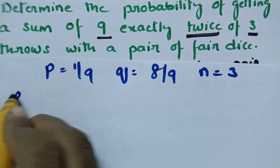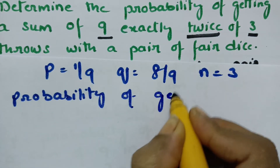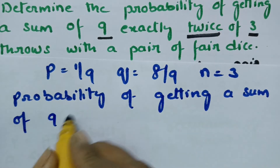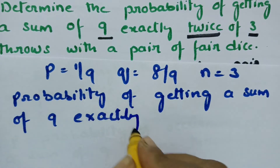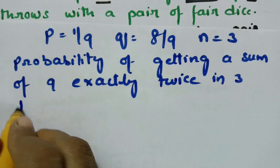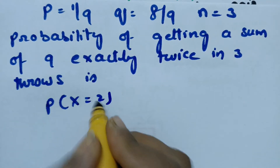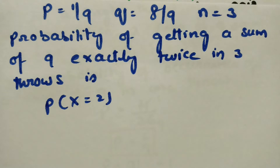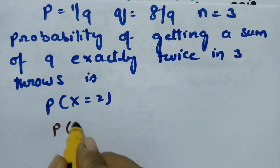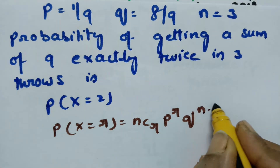Now, the probability of getting a sum of 9 exactly twice in 3 throws: P(X = 2). According to binomial distribution, we have the formula P(X = R) = nCr × P^R × Q^(N−R).